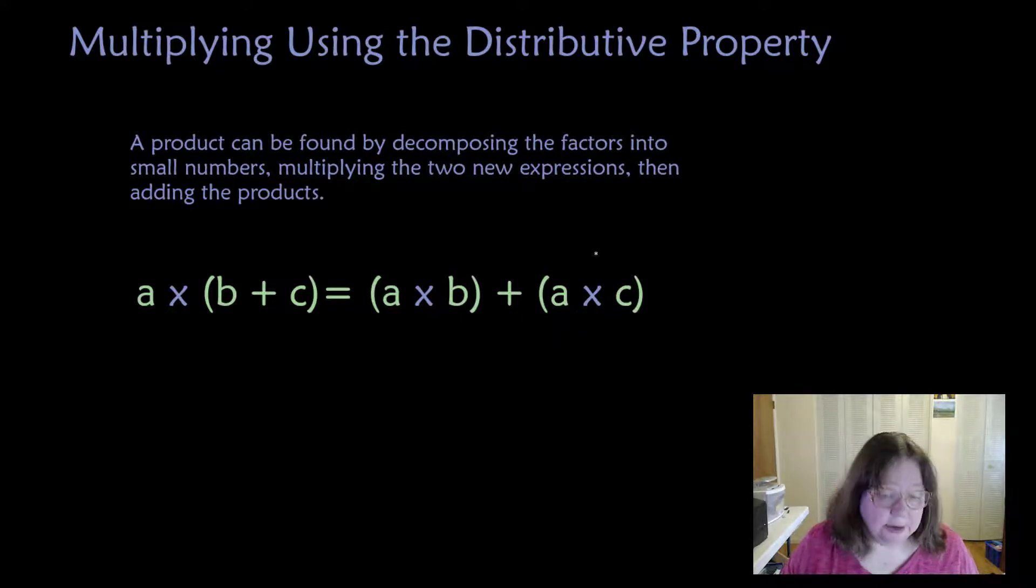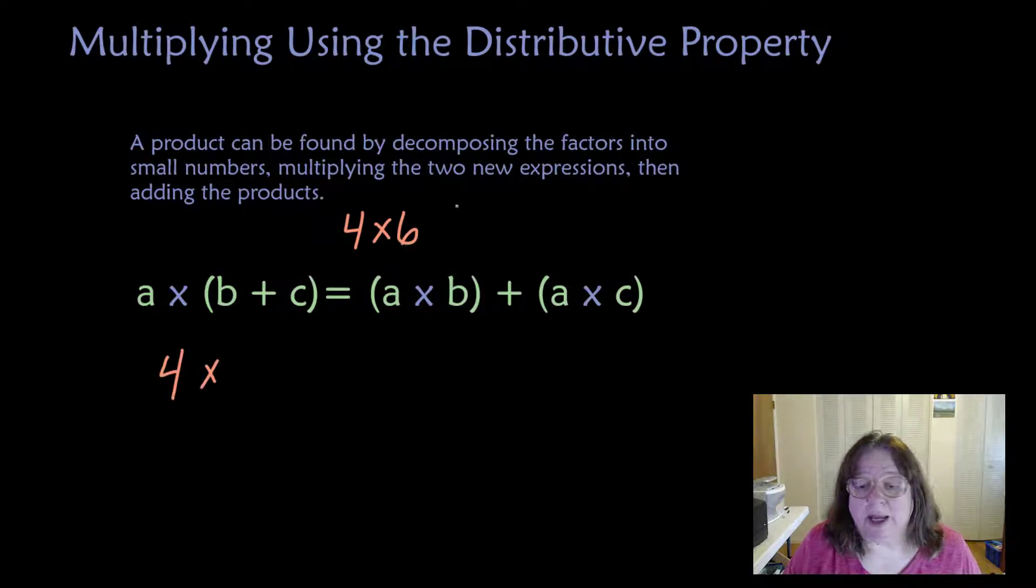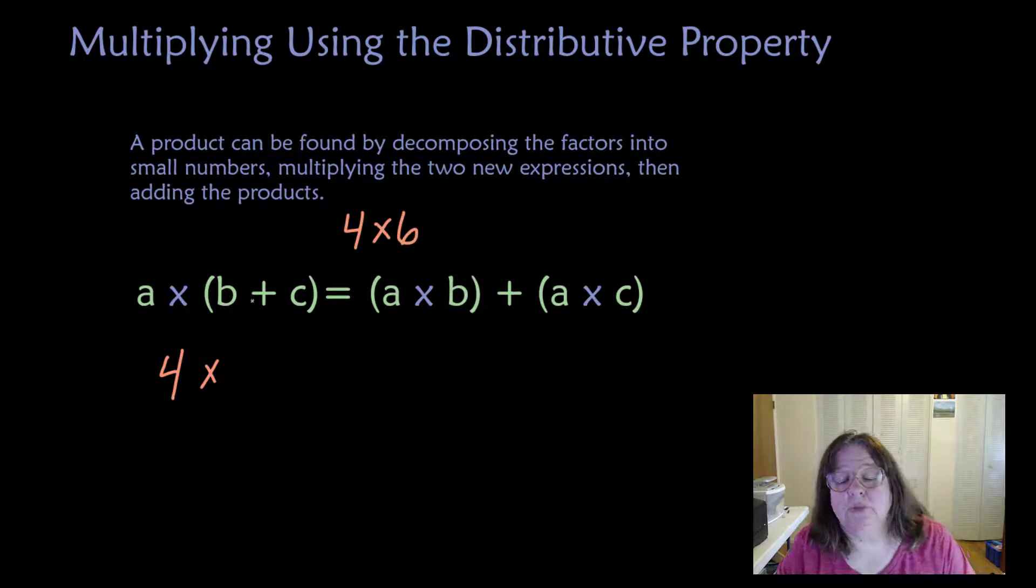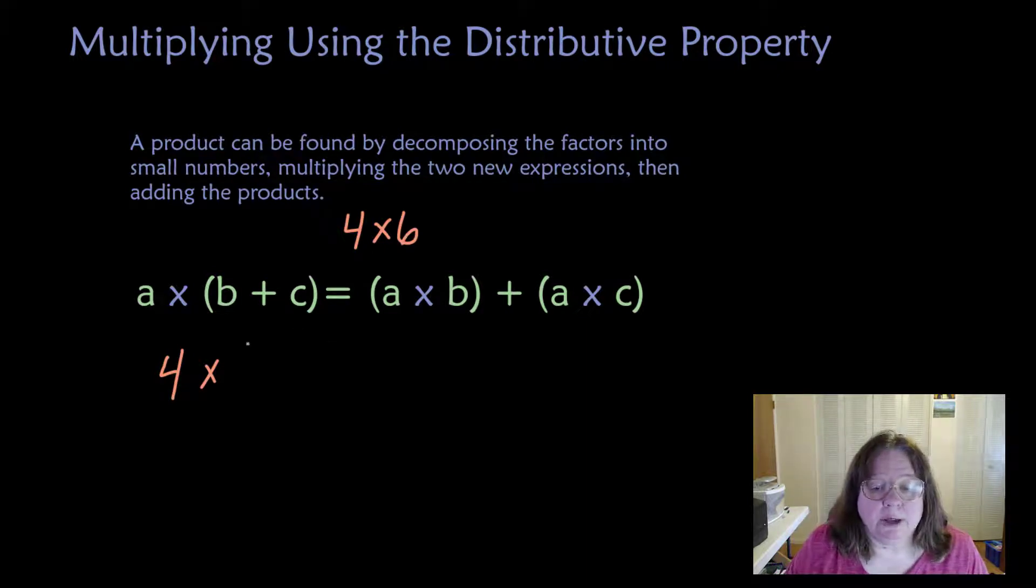Let's try 4 times 6. Let's have 4 be the A and let's break 6 apart into two numbers that are easier to multiply. Now, I already know what 4 times 6 is and I'm sure you do too. The purpose is to deepen our understanding of the distributive property with something that we know so that we can apply this to problems that are more difficult.